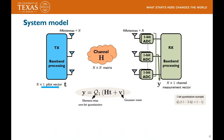Let's get started with the system model for channel estimation. In this system, we consider a linear array of N antennas at both the transmitter and the receiver. The 1-bit receiver shown here has a pair of 1-bit ADCs at each antenna. Each pair essentially samples the I and Q components of the complex baseband signal. The channel is modeled using a narrowband channel matrix of size N×N. Let's say the transmitter sends out the pilot vector t — the receiver acquires a channel measurement vector y, expressed as a 1-bit quantized version of H times t plus Gaussian noise.